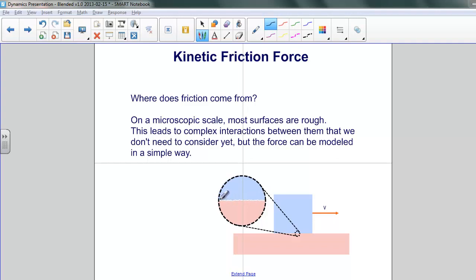So if you were to look at one of these surfaces under a microscope, you would see something like this. And both of these surfaces, when sliding across each other, are going to interact.